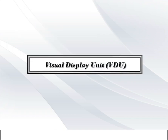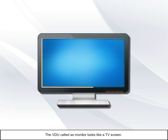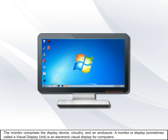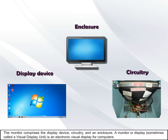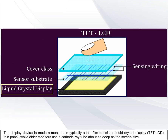Visual Display Unit (VDU), also called a monitor, looks like a TV screen and comprises the display device, circuitry, and an enclosure. A monitor, sometimes called a visual display unit, is an electronic visual display for computers. The display device in modern monitors is typically a thin film transistor liquid crystal display (TFT LCD) thin panel.